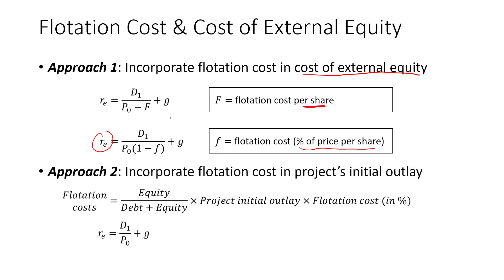The second approach is to incorporate the flotation cost into the project's initial outlay. We take the flotation cost and add it to the initial outlay. To calculate the flotation cost, we take the percentage of equity in the capital structure — equity over debt plus equity — or you may be given the target capital structure. Then we multiply it by the project's initial outlay and by the flotation cost percentage, given here as lowercase f.